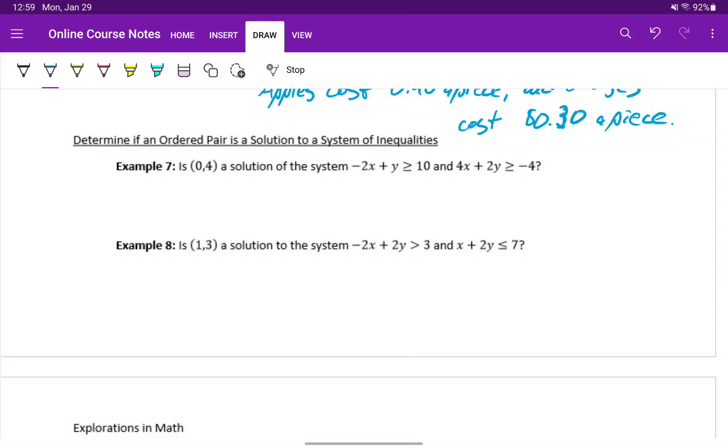In examples 7 and 8, we want to determine if a given ordered pair is a solution to a system of inequalities. This is very similar to how we determine if an ordered pair was a solution to a system of equations. We need to take the given x-y coordinate pair and make sure that it satisfies both of the given inequalities.